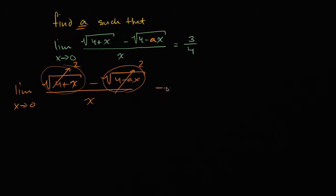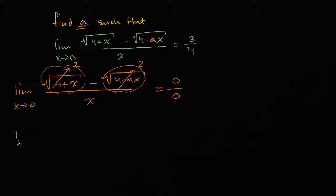So this looks like we are getting an indeterminate form. When you get to something like this, you start to say L'Hôpital's rule might apply. If I get zero over zero or infinity over infinity, this limit is going to be the same thing as the limit as x approaches zero of the derivative of the numerator over the derivative of the denominator.